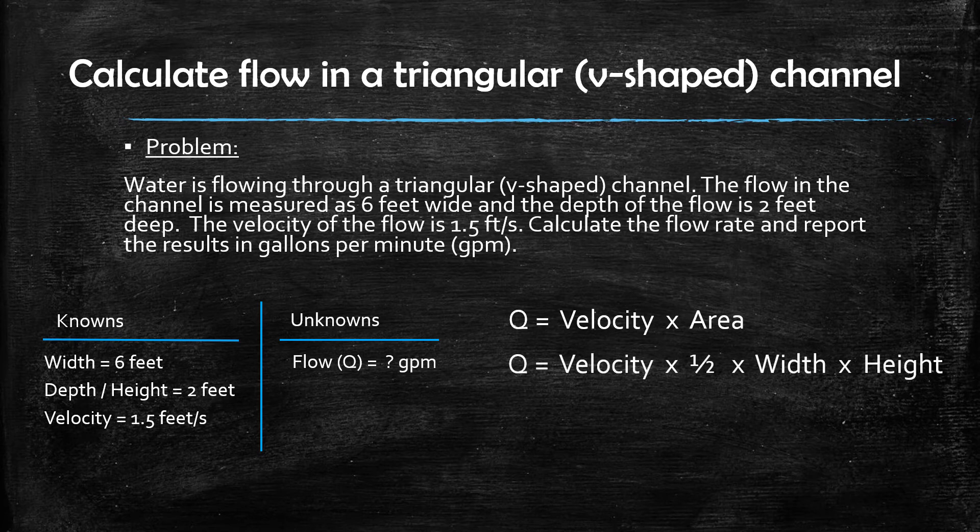The resulting calculation is the velocity multiplied by one-half multiplied by the width of the channel multiplied by the depth or height of the flow in the channel.